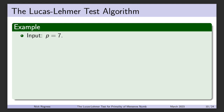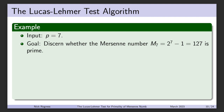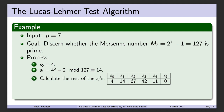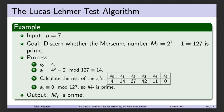Let's walk through the algorithm with M7 = 127. We initialize the sequence at 4, calculate the first term as 14, and compute the rest of the terms. We evaluate s5 since 7 minus 2 is 5. We see that s5 is congruent to 0 mod 127, so M7 is prime. The output is simply that M7 is prime.